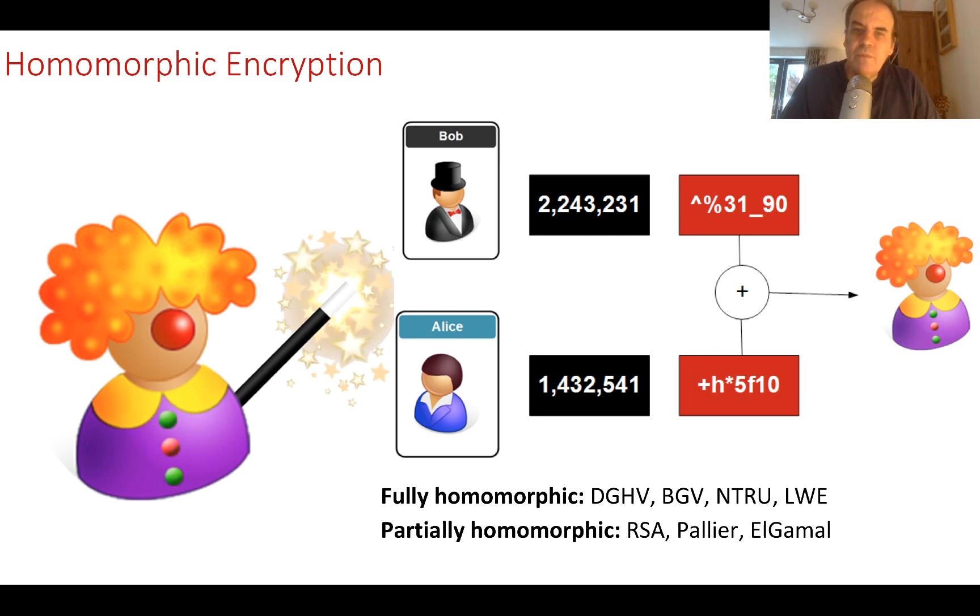So in this way, Bob and Alice could give the values to a data processor, and they would cipher the values. The data processor could then operate on them and give the cipher value back, and there's no way that the data processor would know what the values were that they were operating on.